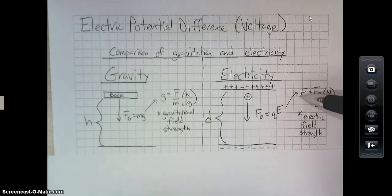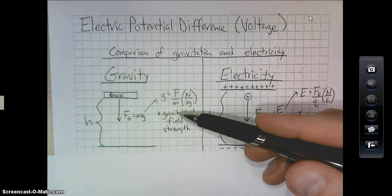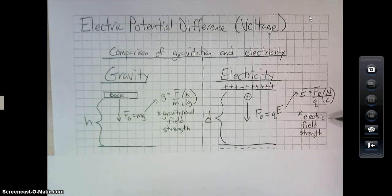If we rearrange this for E, you get E is Fe over Q. That would be the force per unit charge. This was the force per unit mass. Now we've got force per unit charge. The units for charge are coulombs. And we'll talk about the spelling of that later, but that's coulombs. So over here we've got gravitational field strength, and here we have electrical field strength. So far so good.